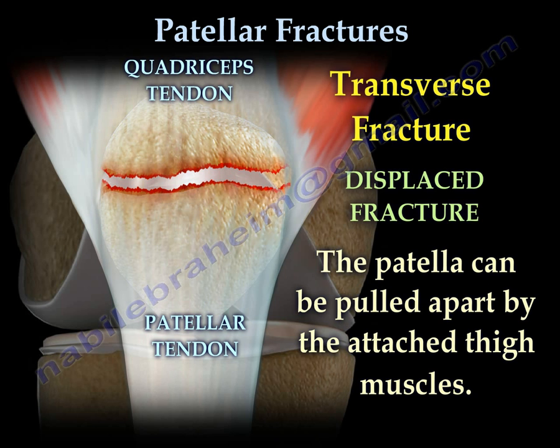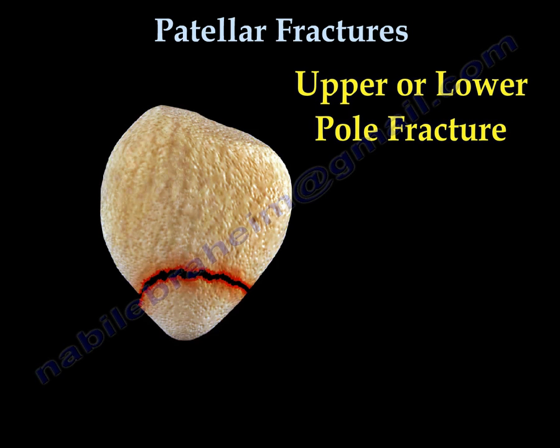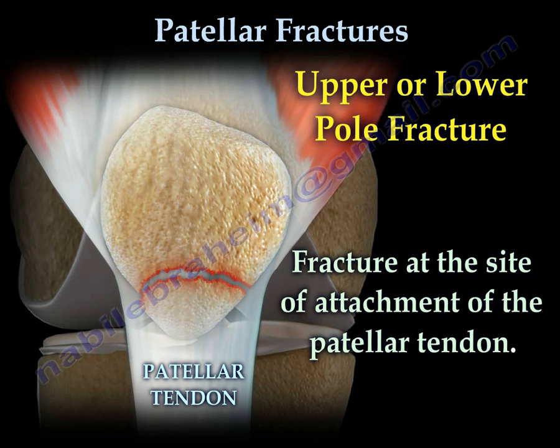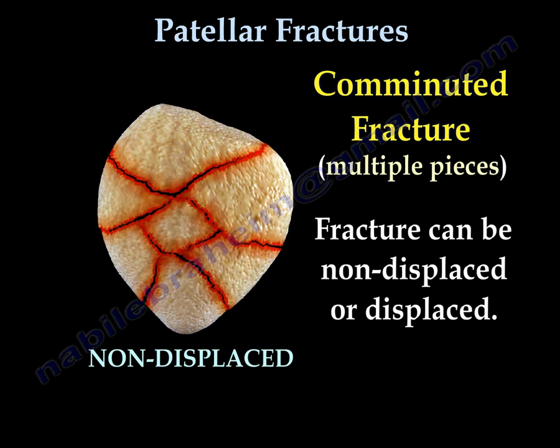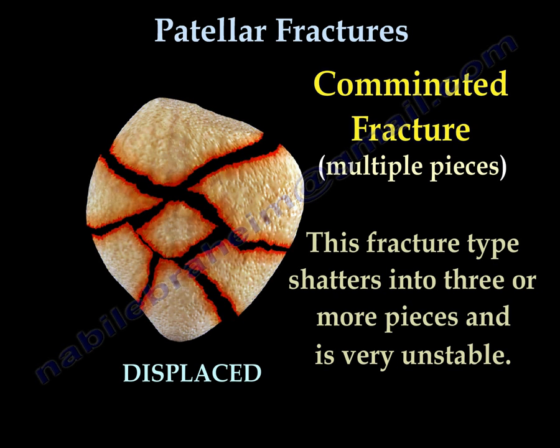With a displaced fracture, the patient will be unable to do active extension of the knee. Upper or lower pole fracture occurs at the site of attachment of the patellar tendon, as you can see here. Comminuted fracture means multiple pieces; the fracture can be non-displaced or displaced. This fracture type shatters into three or more pieces and is very unstable and hard to treat.